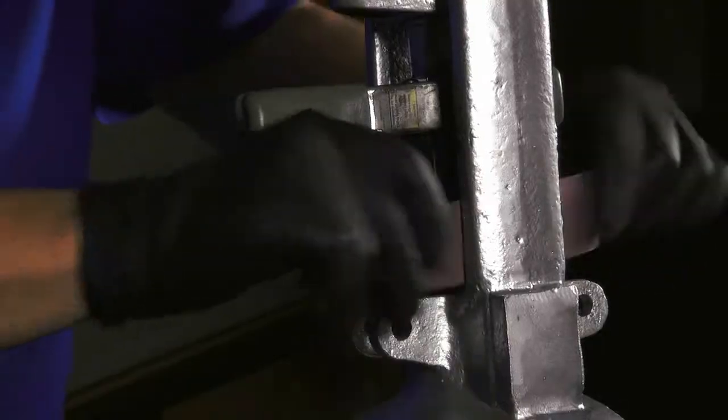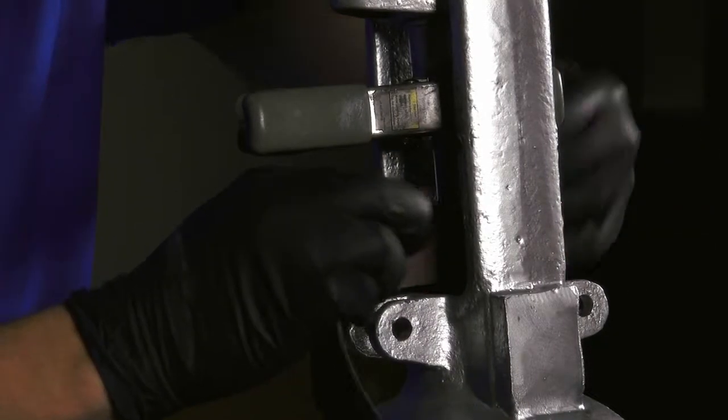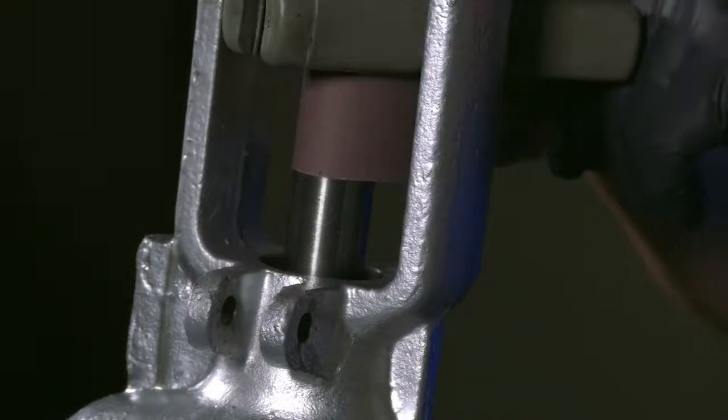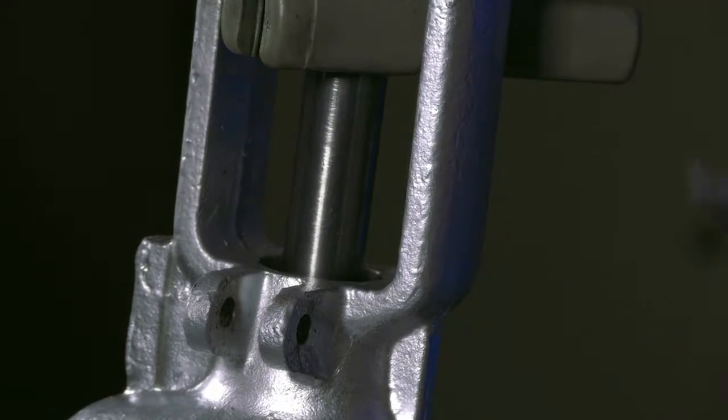In a used valve, use emery cloth to buff out any pits or scoring on the stem that are visible. This damage can void the performance warranty on Chesterton 1622.